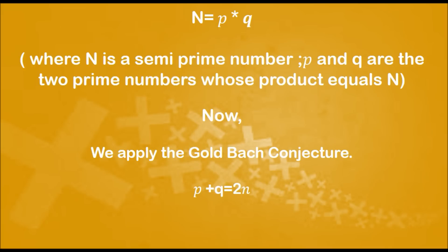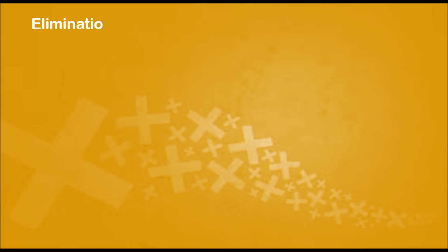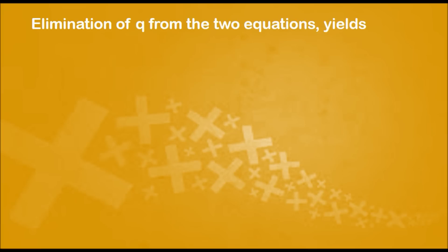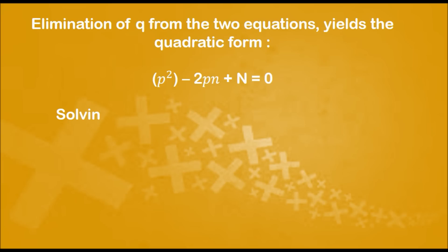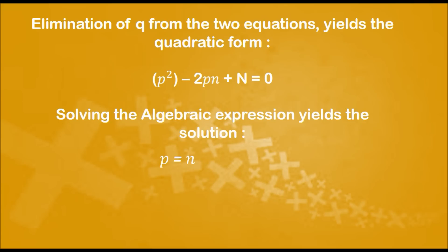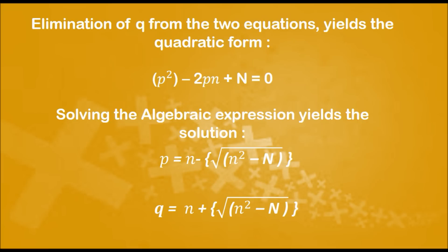Therefore p plus q equals m, where m is the sum and n is the average of p and q. Elimination of q from the two equations yields the quadratic form: p squared minus 2pn plus n equals 0. Solving the algebraic expression further yields the solution: p equals n minus the square root of n squared minus n, and q equals n plus the square root of n squared minus n.